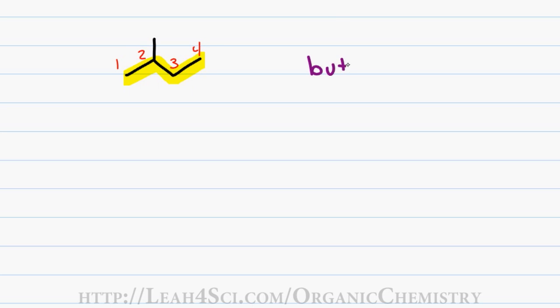This gives me a parent chain of 4 carbons and the first name of butane. Only single bonds gives me a last name of ane. For my substituent, I have 1 carbon on carbon number 2. I use the number 2 since it's the second carbon on the parent chain, meth to show that it's a single carbon and YL to show that it's a substituent.